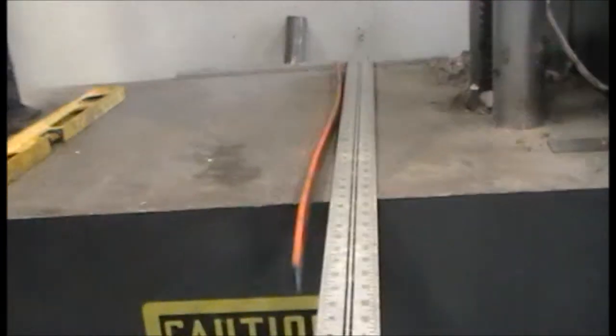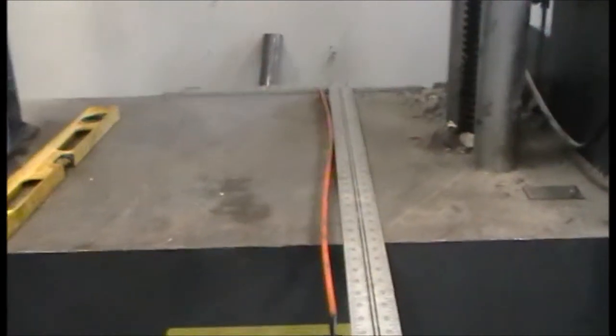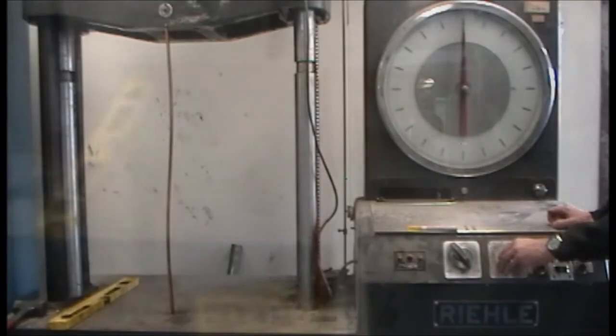Then a member of the same length was bent into a shape that was approximately a full sine shape. Then this column was loaded.